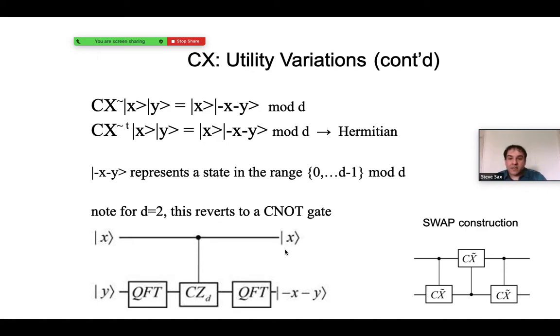Also note that to make a control shift tilde gate, we would make it analogously to the way a CNOT gate is made. You would have a control Z gate. Of course, here it would be the control generalized Z gate. But instead of having Hadamards on each side, you would have quantum Fourier transform gates on each side.